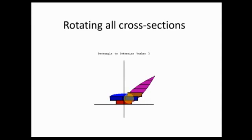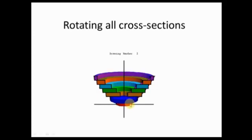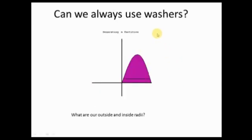So right now what it's doing is showing you the back half of this solid. See how all of these are formed by washers, just being stacked one on top of the other. Then they'll put in the front half of the washer. And there's our solid. So can we always use washers?